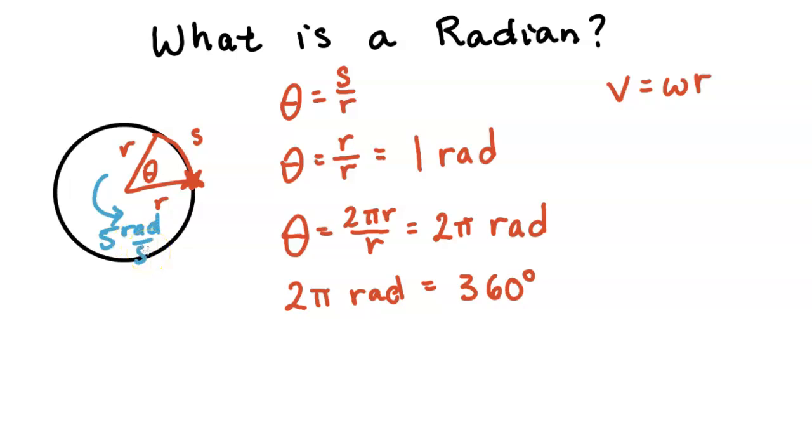So every second it's rotating 5 radians of angle. We'll plug in 5 radians per second, and let's say the radius is 0.3 meters. We can multiply these two numbers and we get 1.5 meters per second.